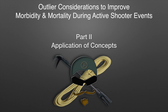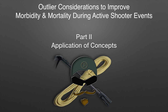We are going to hit on Part 2 with the application of concepts of the outlier considerations to improve morbidity and mortality during active shooter events. This is the follow-up to Part 1A and Part 1B, so hopefully you've checked that out. We waited on starting this part and hanging Part 2 and Part 3 up for a couple of reasons.